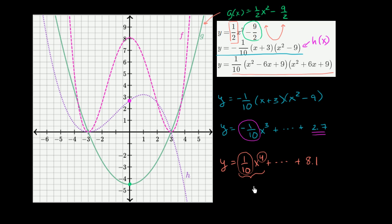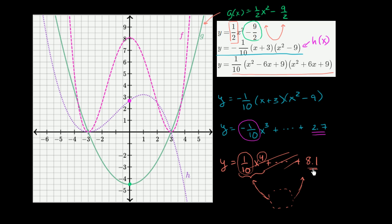When x is really negative it's really positive, and when x is really positive it's really positive. Looking at the graphs, f clearly has that type of end behavior, doing something interesting in the middle. To be sure, we check the y-intercept: when x equals 0, all other terms drop out and we're left with 8.1. And we can see that f is indeed sitting at 8.1 when x is 0. So we can feel pretty confident that is f of x.